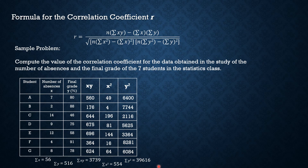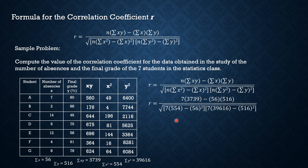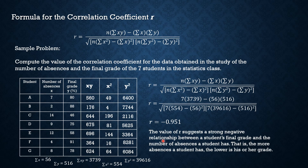Now that we have all these values, let's substitute them into the formula for the correlation coefficient r. By calculating this, we get a value of r = negative 0.951. The rounding rule is to round to three decimal places. This value of r suggests a strong negative linear relationship between a student's final grade and the number of absences — that is, the more absences a student has, the lower his or her grade.